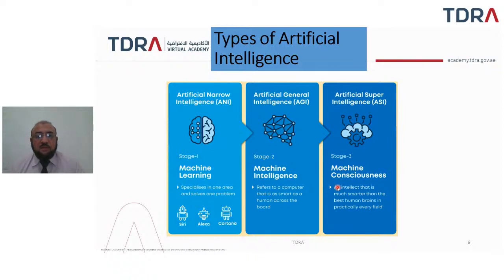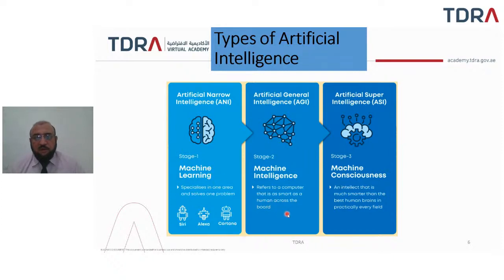Then we have Artificial General Intelligence, which refers to a machine as smart as a human across the board. This is in process, but we have not yet achieved such a computer that can be as smart as a human.